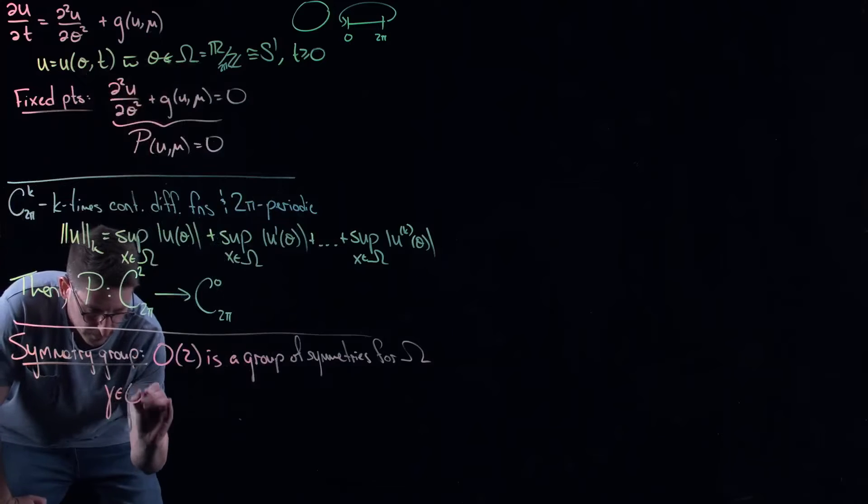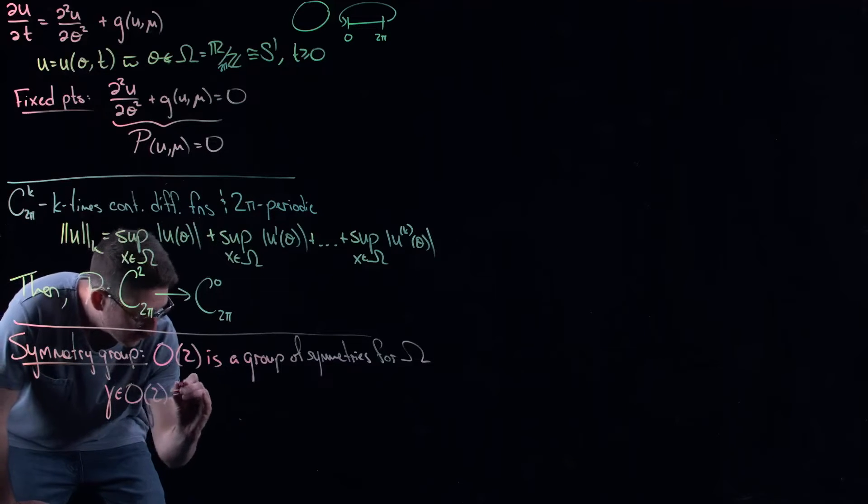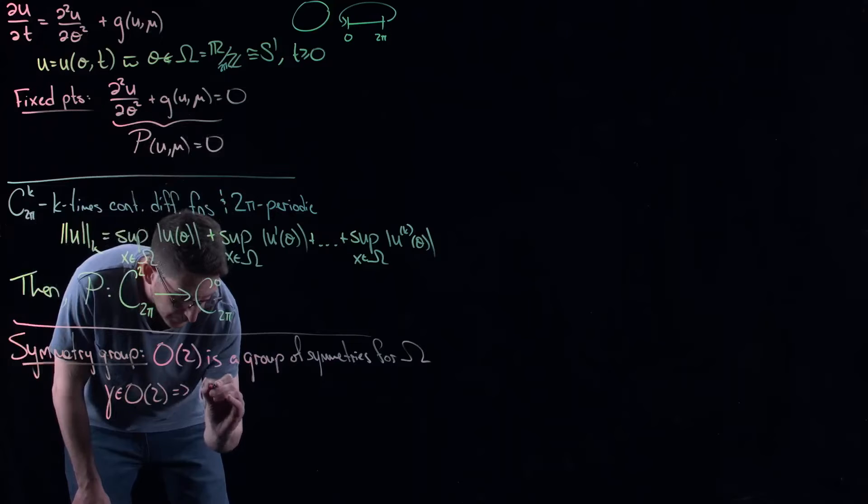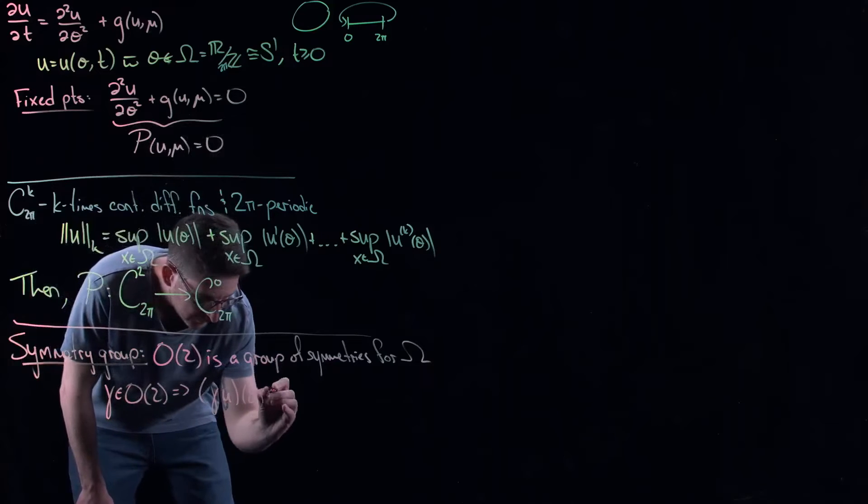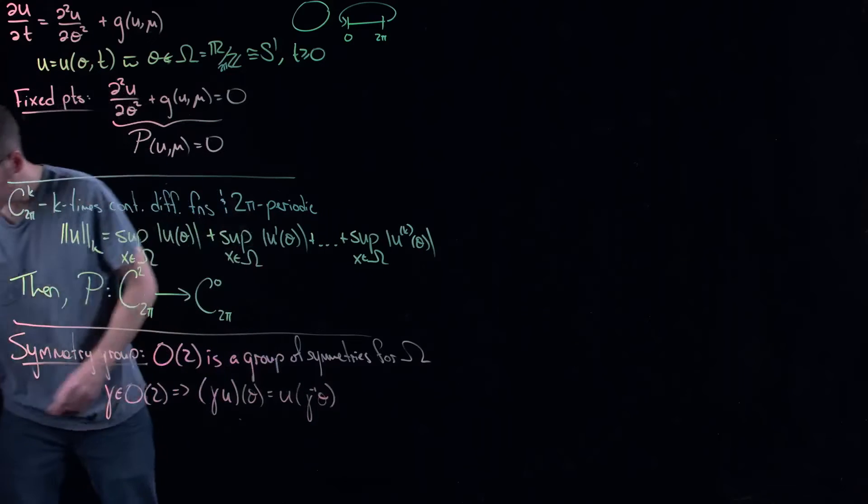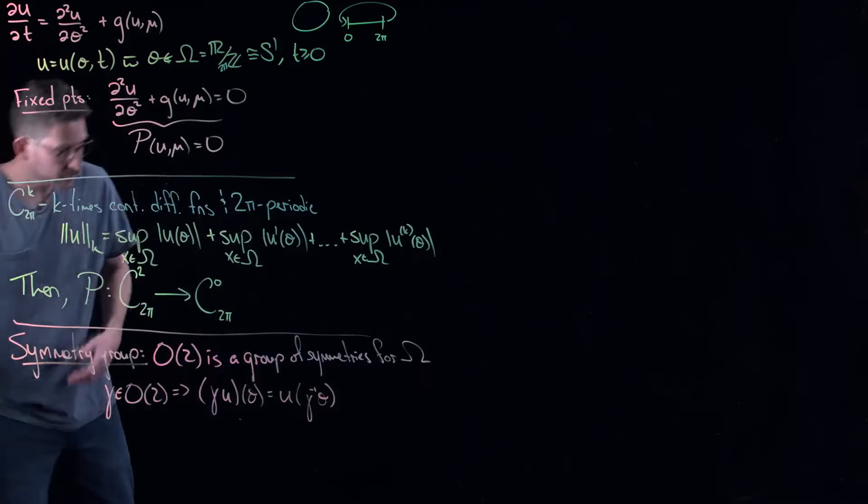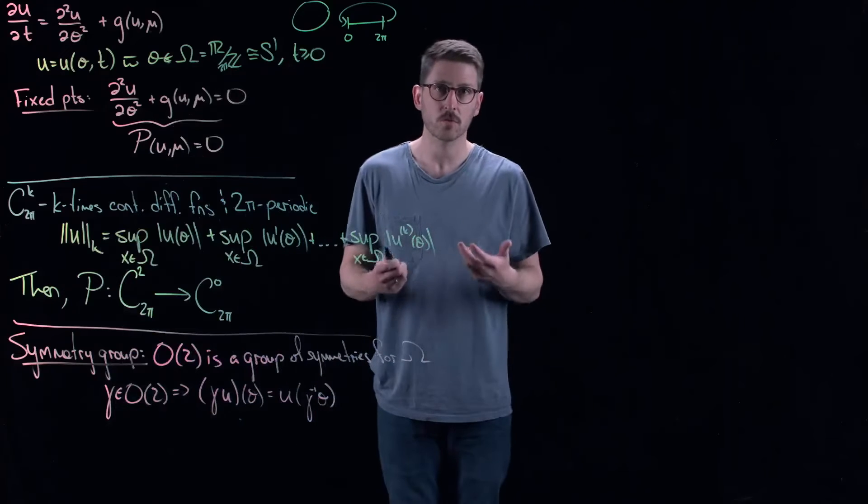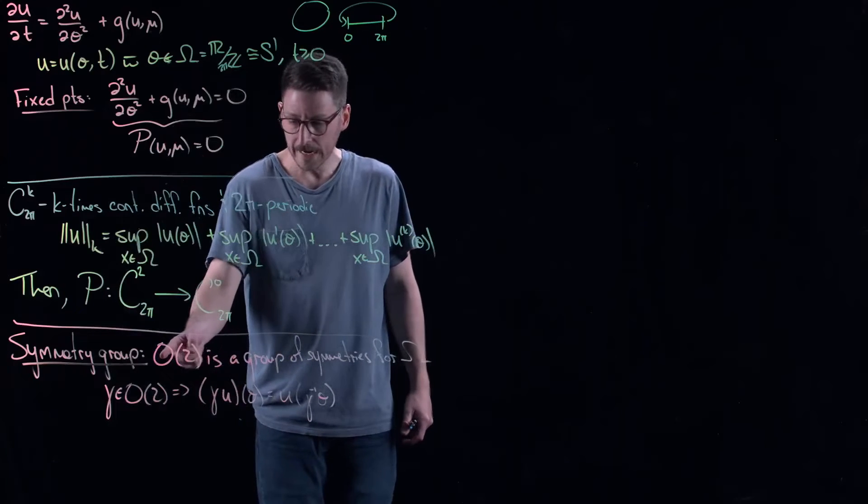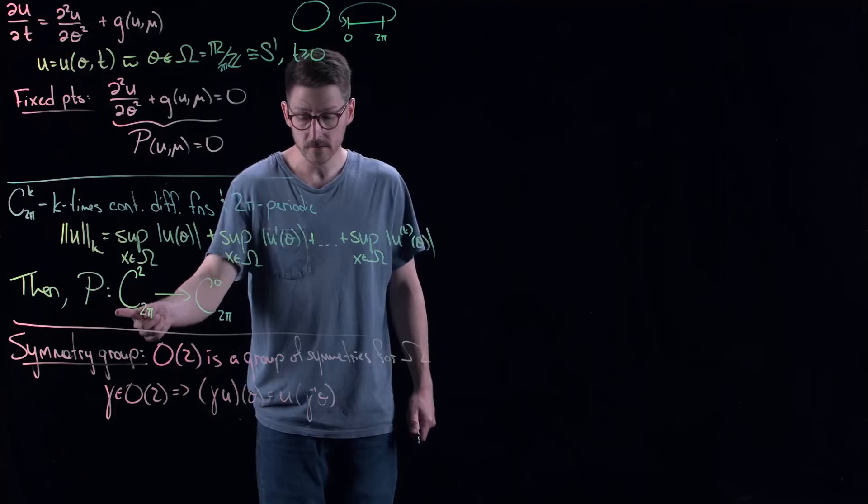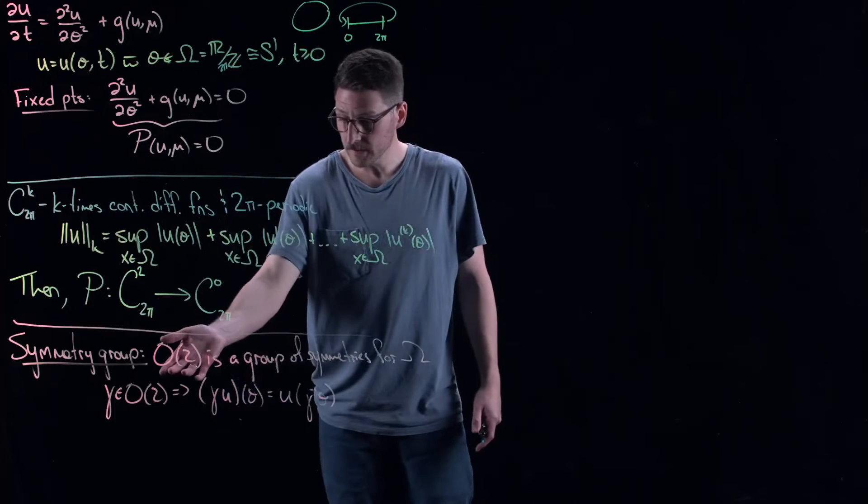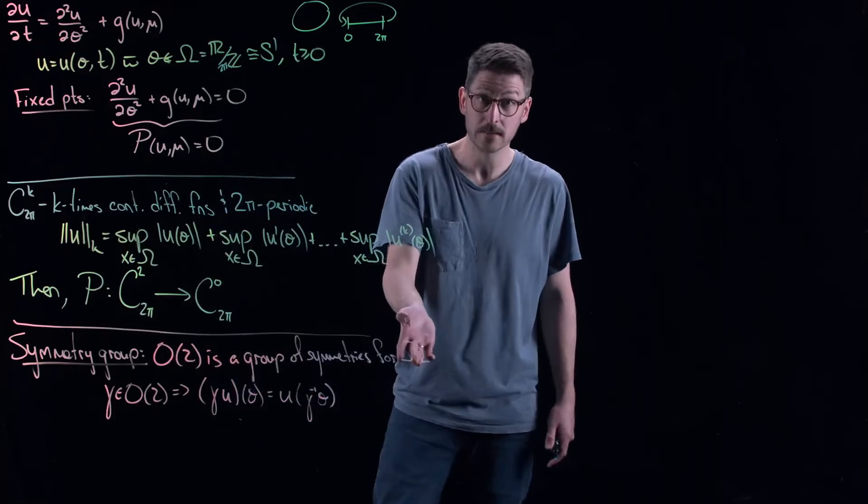But it turns out that groups of symmetries for the domain are how we understand groups of symmetries for the original problem. Because the way that this group is going to act on functions is through the domain elements. So for example, if I have gamma, which is an element of O(2), this implies that gamma of U of theta is equal to U of gamma inverse of theta. Now you're looking at that right away and you're thinking, what's with the inverse? Again, if you know a little bit of group theory, this is to make the action work properly.